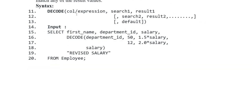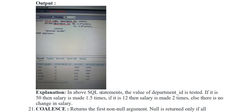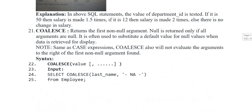Syntax put kia gaya: DECODE(column_expression, search1, result1, search2, result2, default). Input put kia gaya: SELECT first_name, department_id, salary, DECODE - same procedure apply kia gaya DECODE function mein.